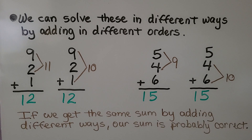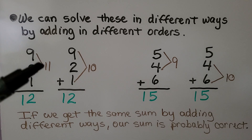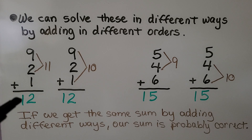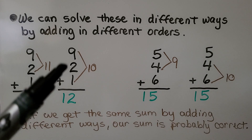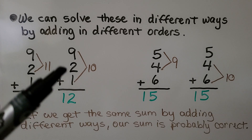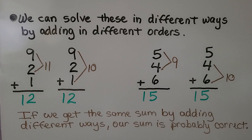We can solve these in different ways by adding in different orders. We have nine plus two plus one. We can add the nine plus two, which equals 11, and then add the one more to get 12. We could also add the nine plus the one to make a 10, then add the two — that equals 12.